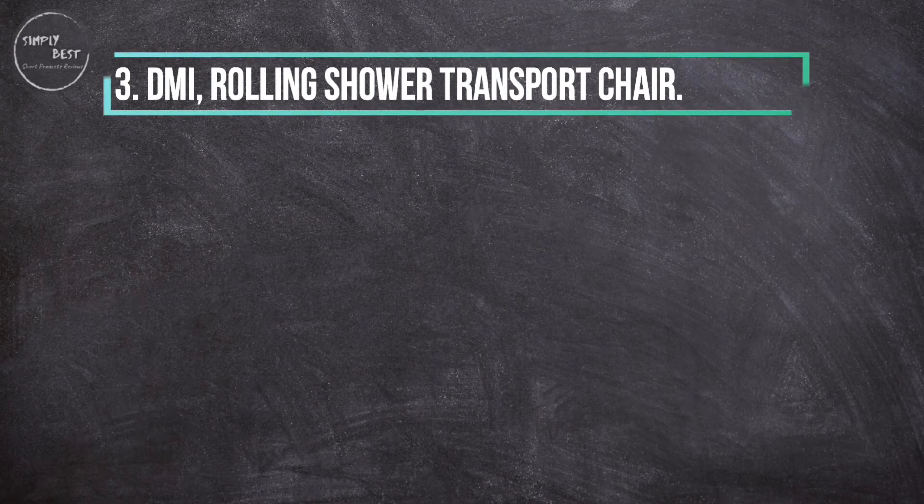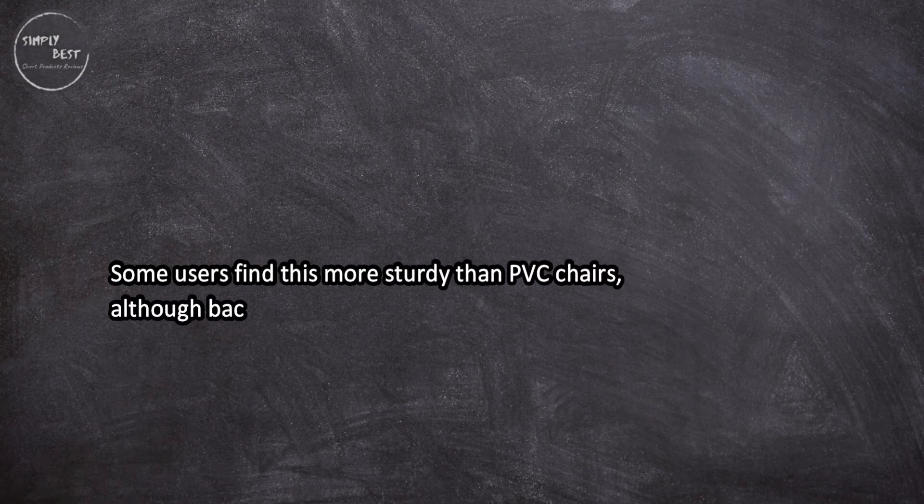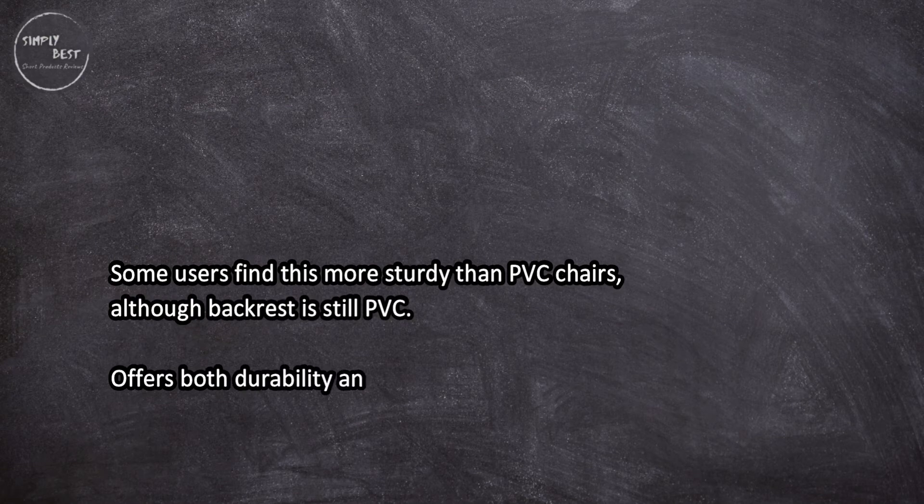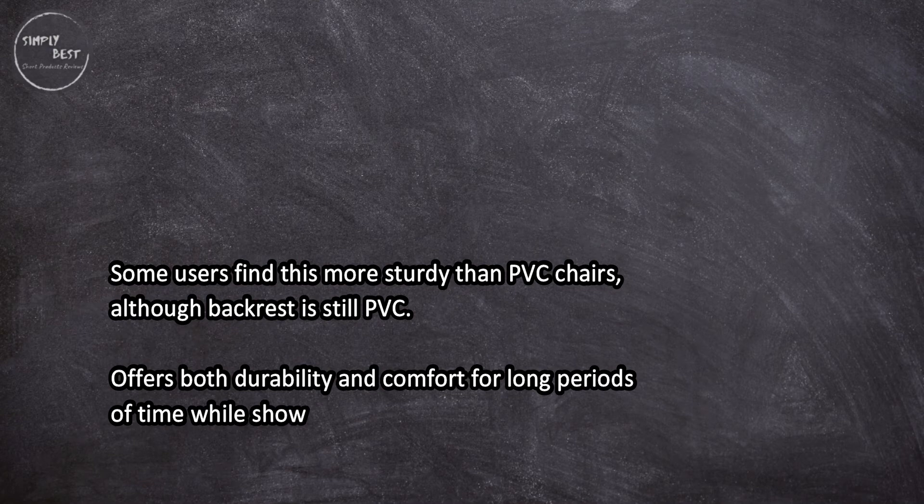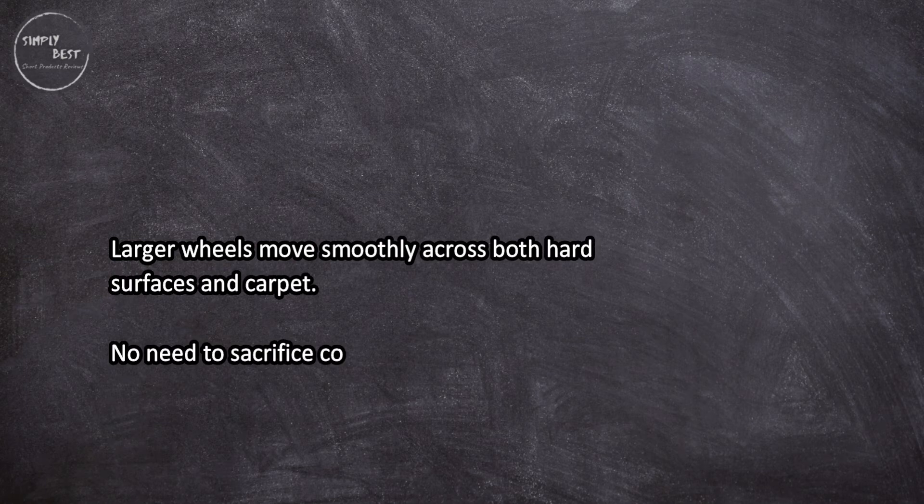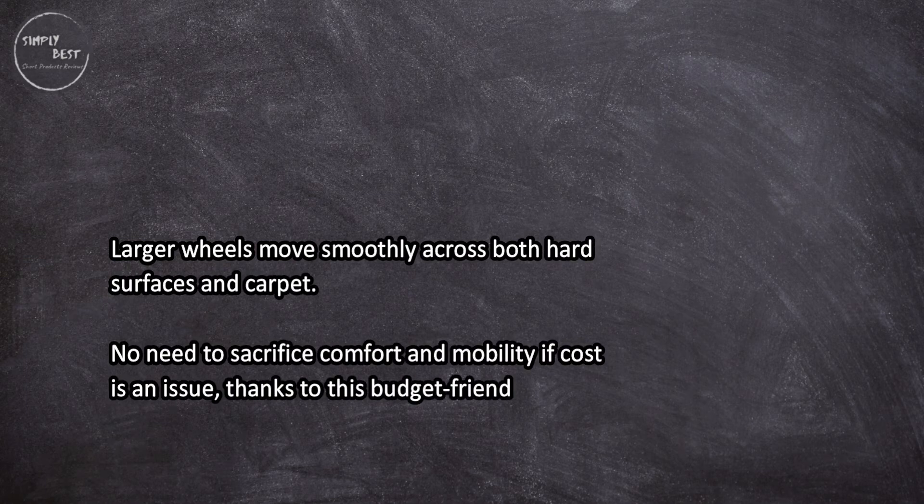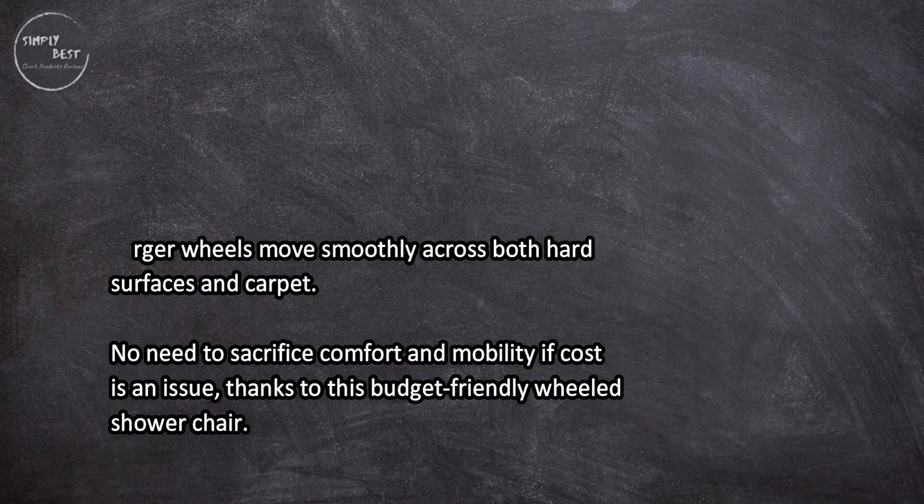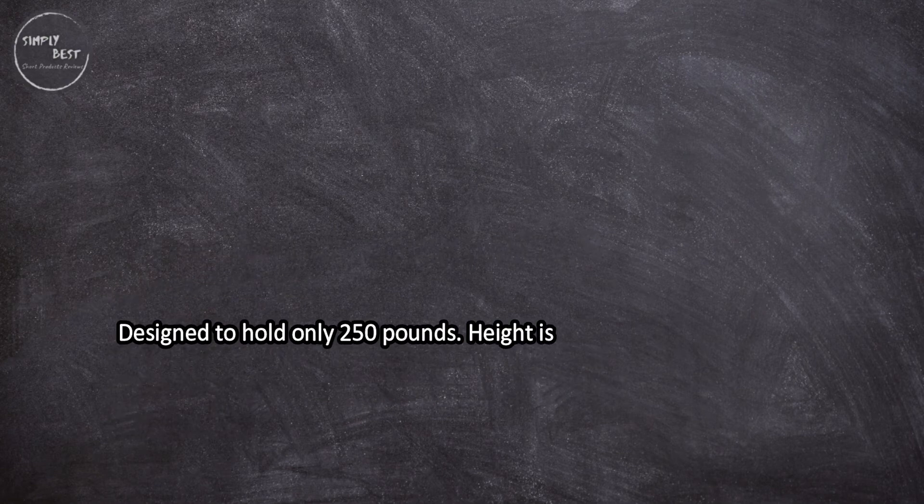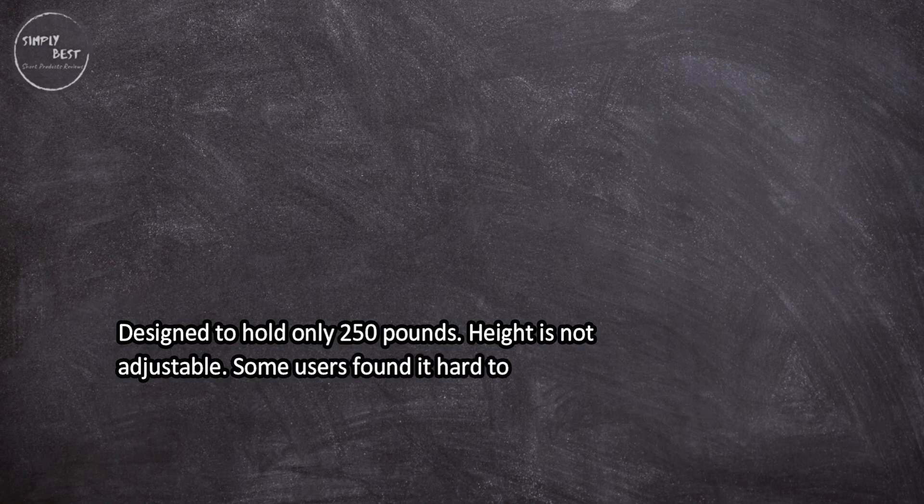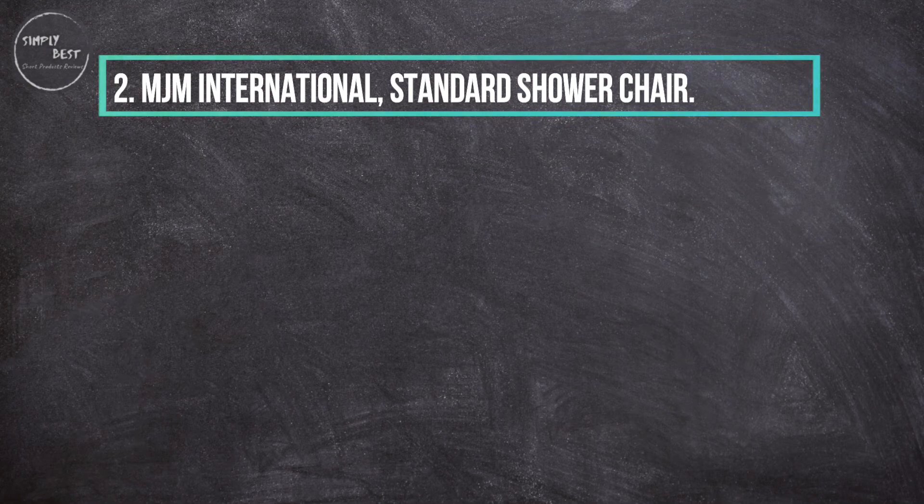Let's get started. At number three, TMI Rolling Shower Chair. Some users find this more sturdy than PVC chairs, although the backrest is still PVC. It offers both durability and comfort for long periods of time while showering or using the toilet. Larger wheels move smoothly across both hard surfaces and carpet. No need to sacrifice comfort and mobility if cost is an issue, thanks to this budget-friendly wheeled shower chair. However, it's designed to hold only 250 pounds, height is not adjustable, and some users found it hard to assemble.